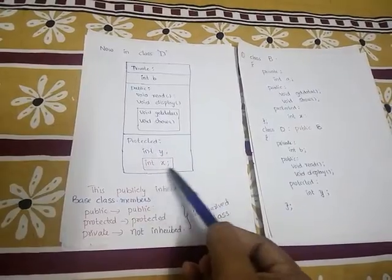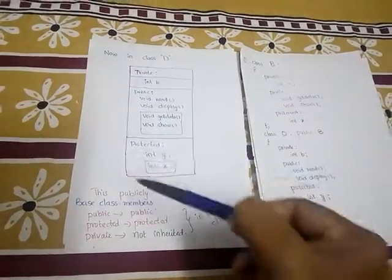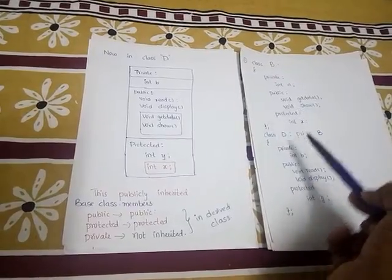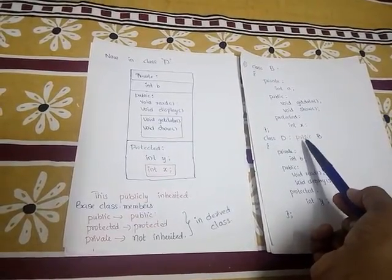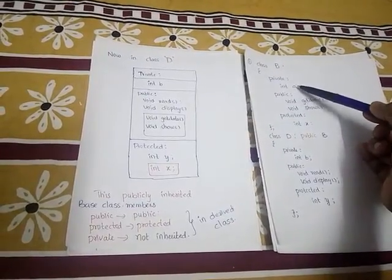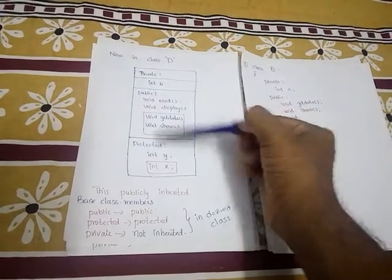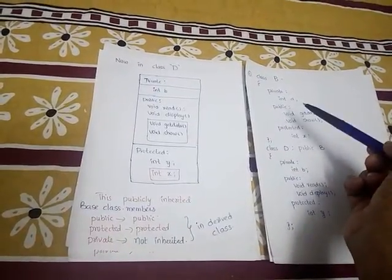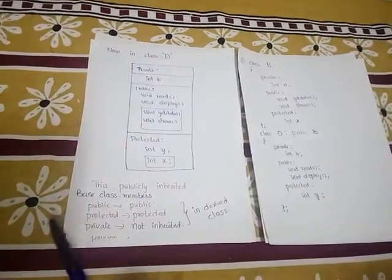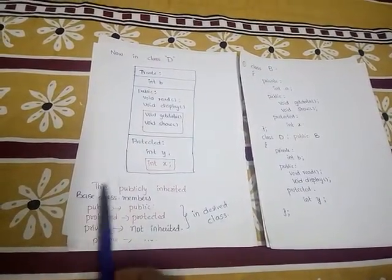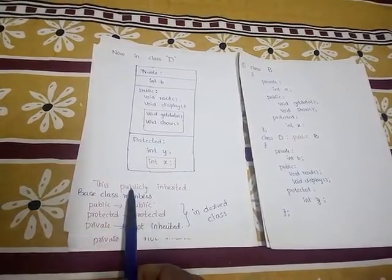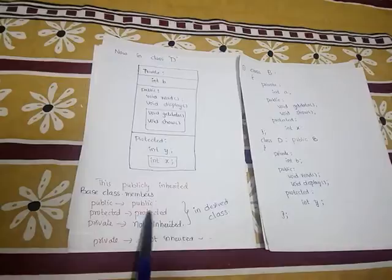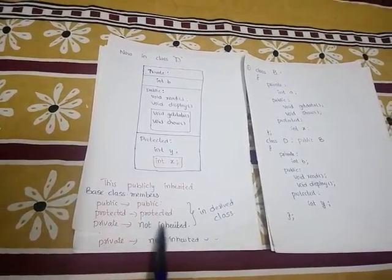Class D also has its own protected member int y. Note that even in public mode, the private data member int a from class B is not inherited into class D — you cannot access private data members of the base class. To summarize: in public inheritance, public members of the base class are public in the derived class, protected members remain protected, and private members are not inherited.